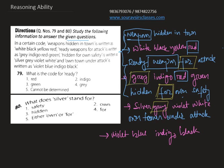Now if we compare 'hidden for own safety' and 'own town under attack,' we can find that 'own' is the common word between those two statements. And as we can see, 'violet' is the common code word, so violet is the code for 'own.'